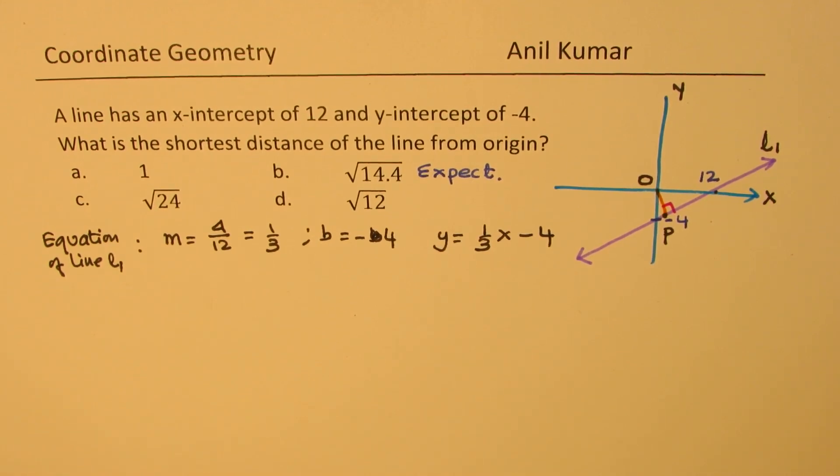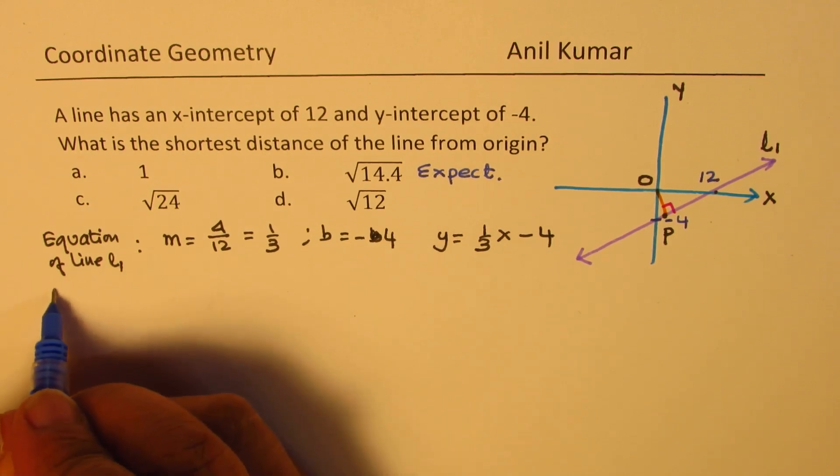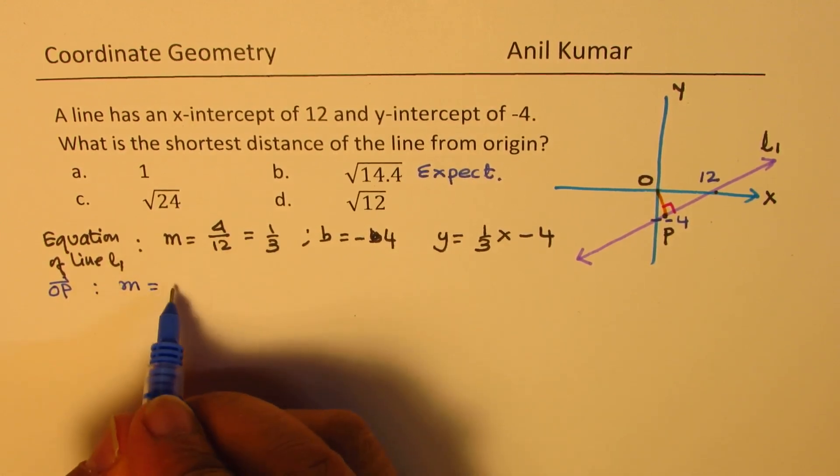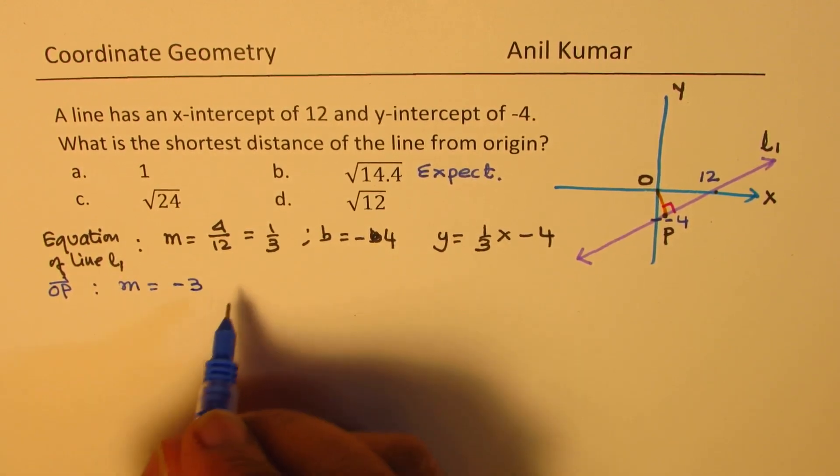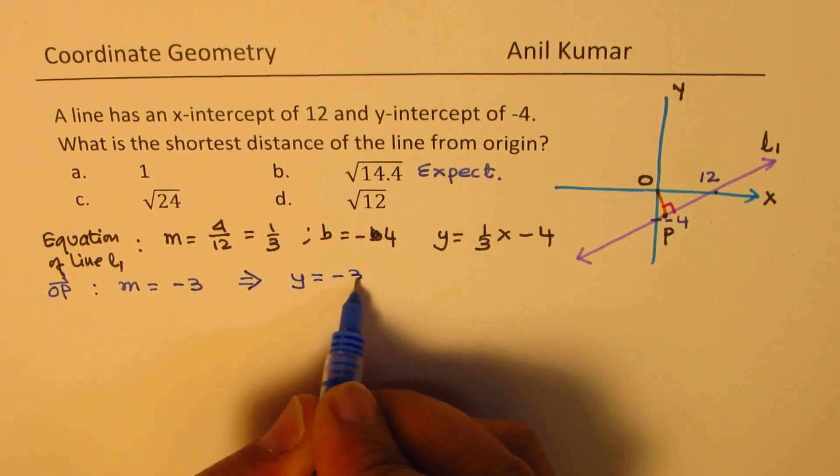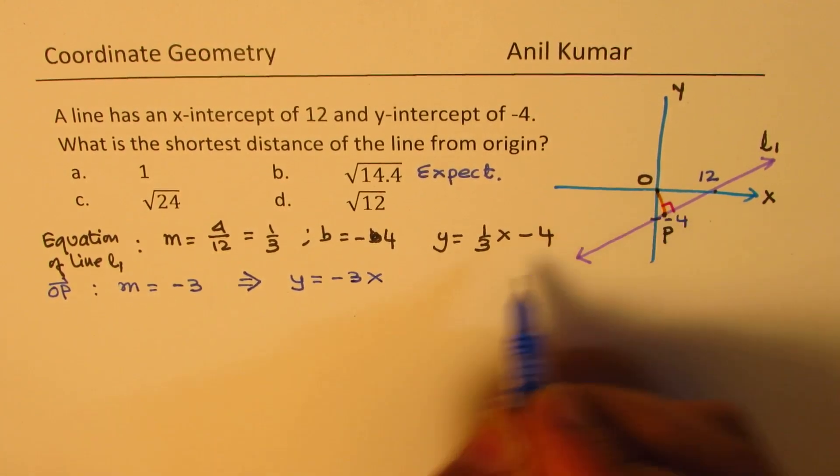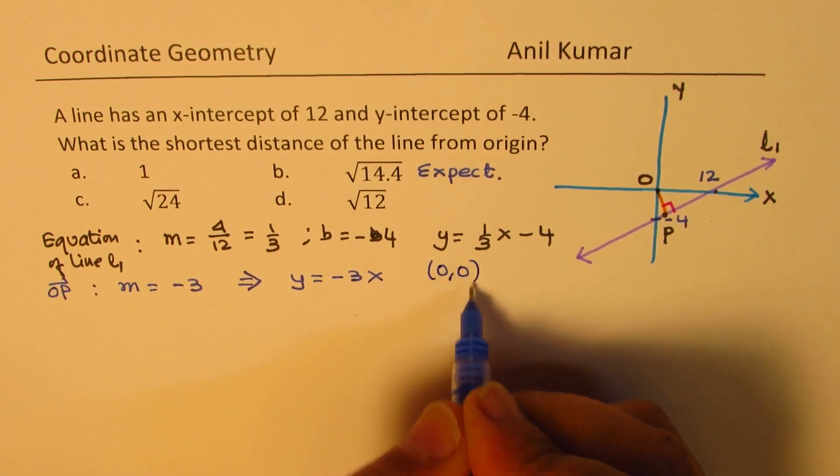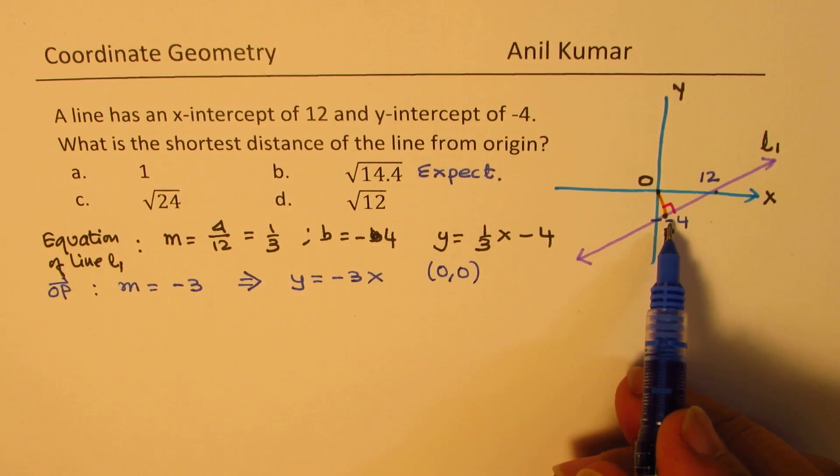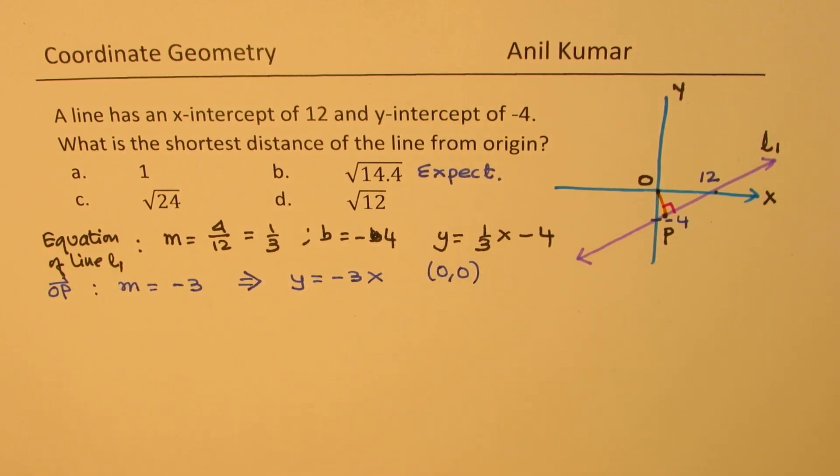Now, let's talk about the perpendicular OP. So, if you are looking for the line OP, in that case, the slope should be equal to negative reciprocal, that means minus 3. And therefore, the equation will be Y equals to minus 3X. Since it goes through origin. So, we have the equation of both the lines. And now, we should find the point of intersection.